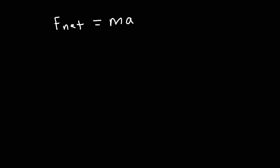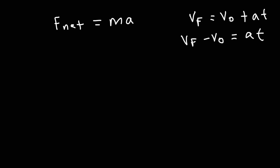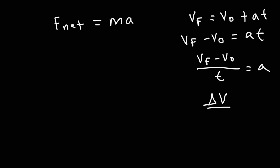Now based on Newton's second law, the net force acting on an object is equal to mass times acceleration. Going back to kinematics, the final velocity equals the initial velocity plus a times t. If we subtract the initial velocity from both sides and then divide by t, we get that acceleration equals v-final minus v-initial over t. So the acceleration is the rate at which velocity changes — it's delta v over delta t.